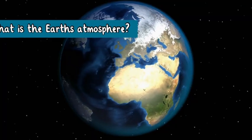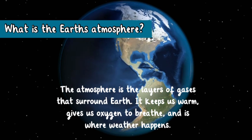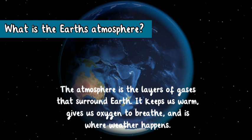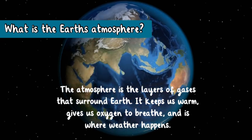What is the earth's atmosphere? The atmosphere is the layers of gases that surround earth. It keeps us warm, gives us oxygen to breathe and is where the weather happens.